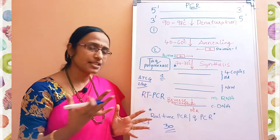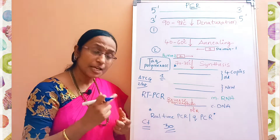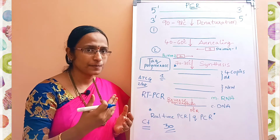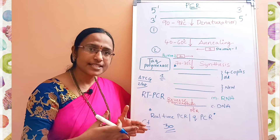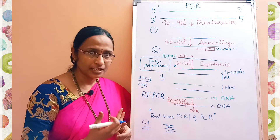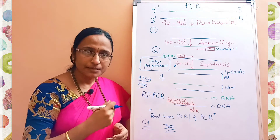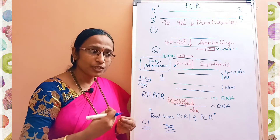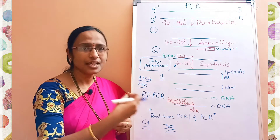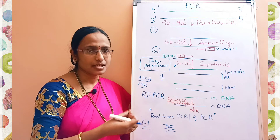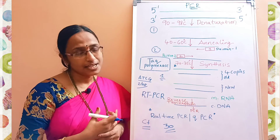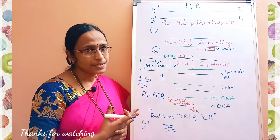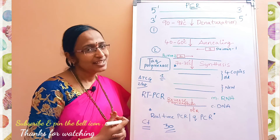Coming to the applications of PCR and RT-PCR: PCR is used for amplification of DNA and RNA, detection of DNA polymorphism, DNA sequencing, DNA fingerprinting, determining the sex of an embryo by sequencing its DNA, and identifying transgenes — DNA transferred from one cell to another. These are the applications of PCR and RT-PCR. Today we understood what is PCR, RT-PCR, real-time PCR, and the CT value. Thank you.